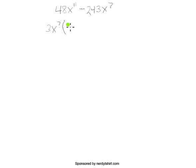And what's left here is 16x to the fourth minus 81. We can see here then that this is a difference of squares, so we can factor that further.